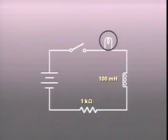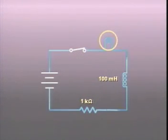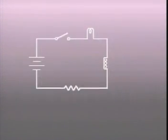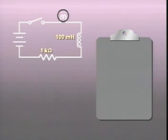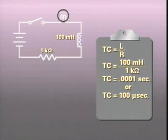Let's assume that our 1 ampere circuit has a 100 millihenry inductor and a 1 kilo-ohm resistor. To find out how long the time constant is, we insert these values into our time constant formula to get 0.0001 seconds, or 100 microseconds.